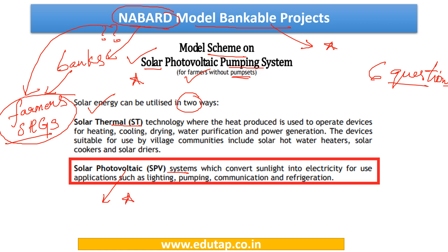Solar thermal technology is where the heat produced is used to operate devices for heating, cooling, drying, water purification, and power generation. Devices can include solar water heaters, solar cookers, or solar dryers. SPV systems, on the other hand, convert sunlight into electricity for applications such as lighting, pumping, communication, and refrigeration.